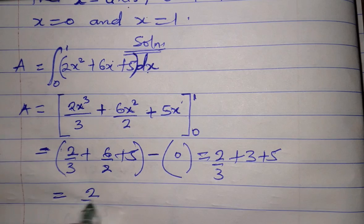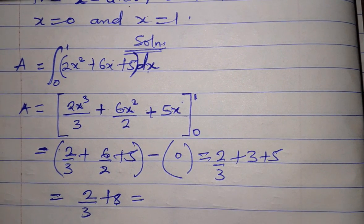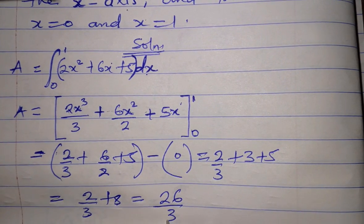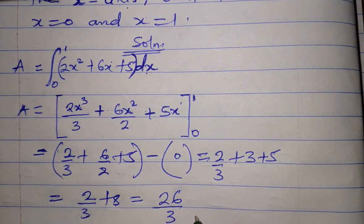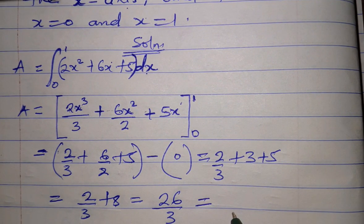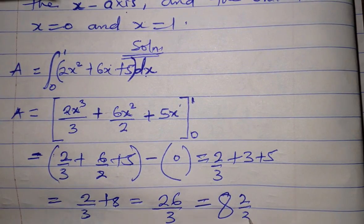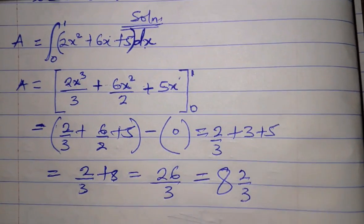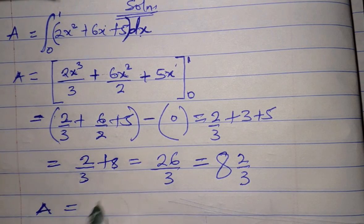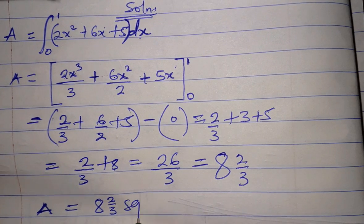That's 2/3 plus 8. 3 times 8 is 24, 24 plus 2 is 26, so this is actually 26/3. 26/3 can be broken down to obtain 8 and 2/3. So the area bounded by the curve and the x-axis is 8 2/3 square units.